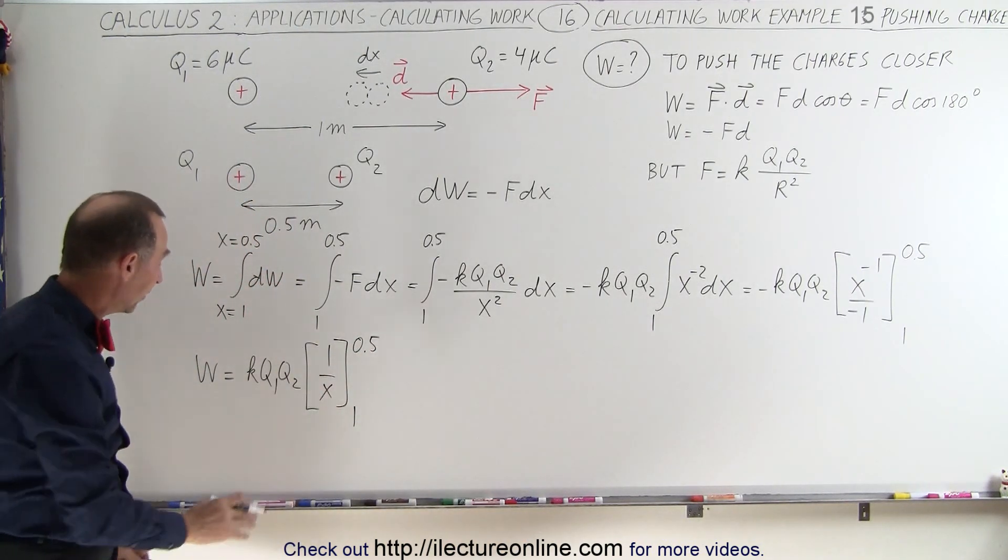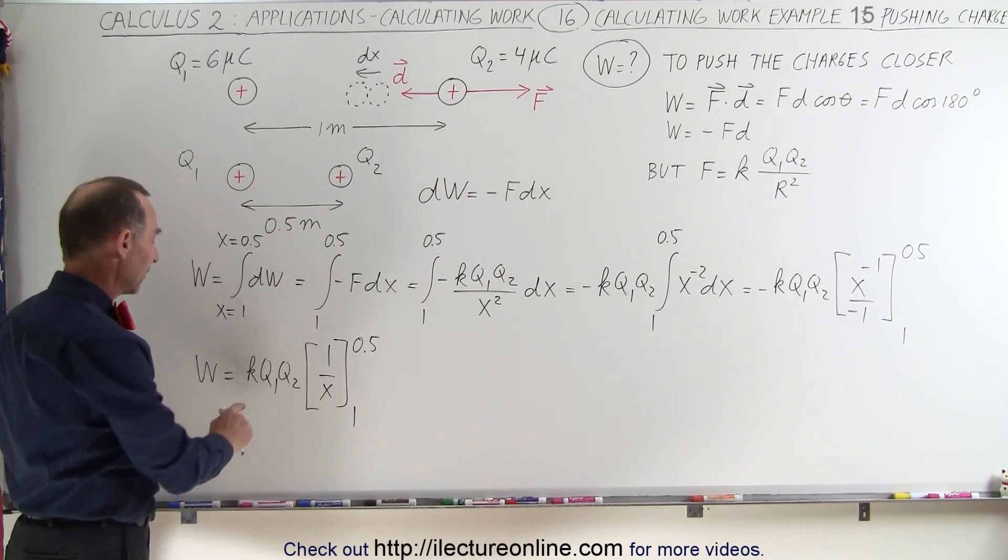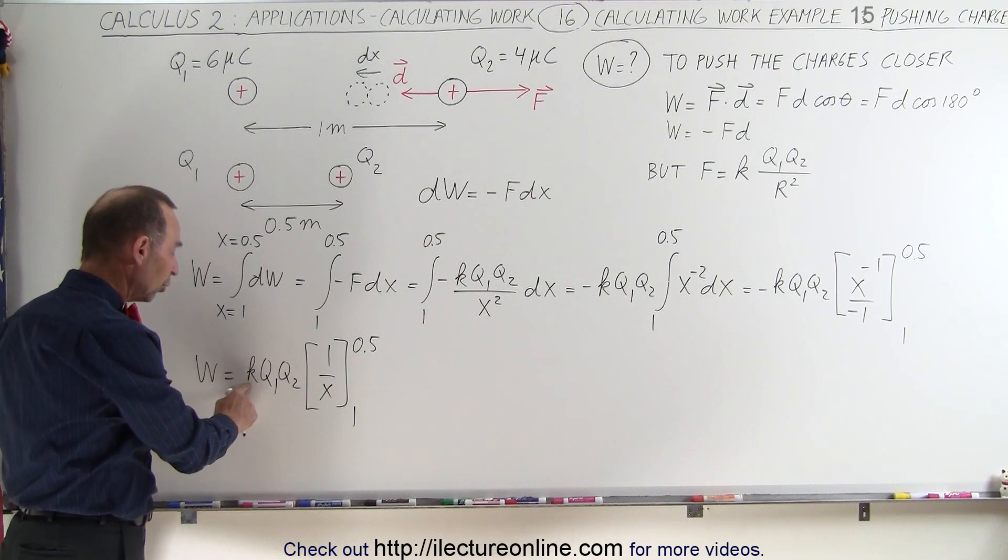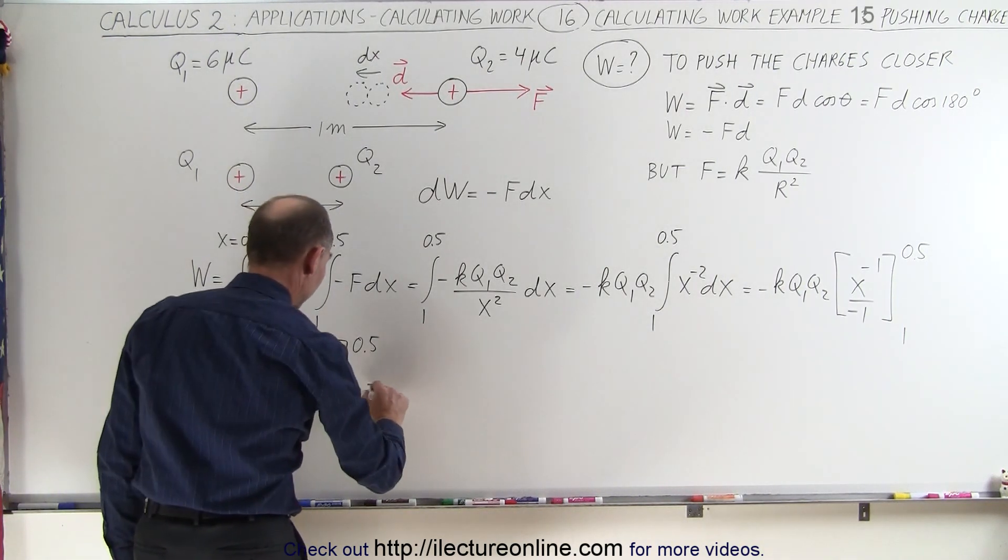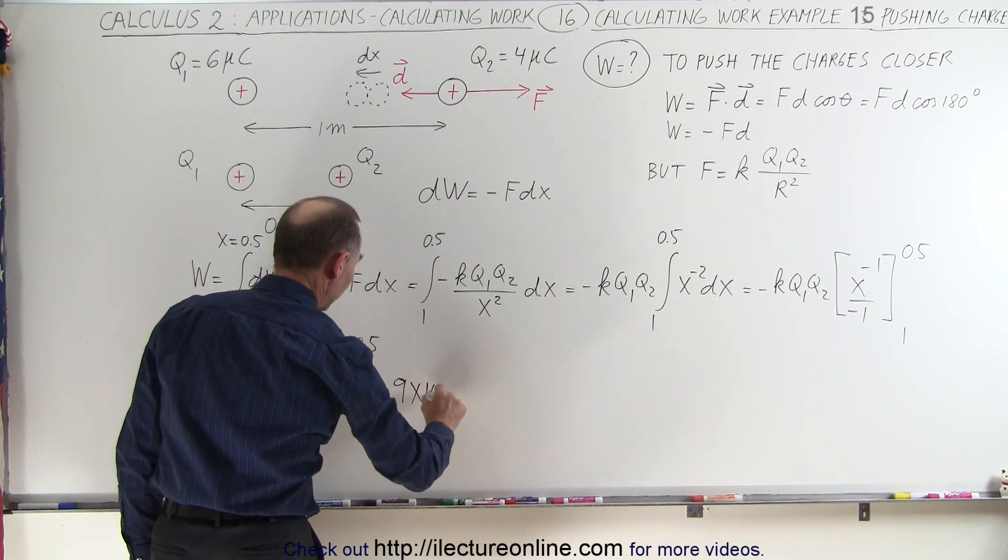And now we're ready to plug in the limits and to plug in values. Now k in Coulomb's law is equal to 9 times 10 to the 9th. So this is 9 times 10 to the 9th.